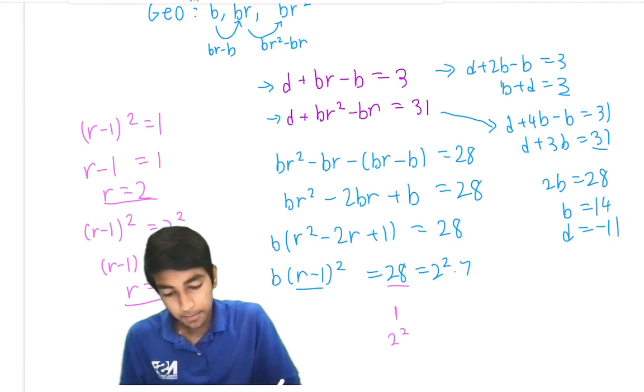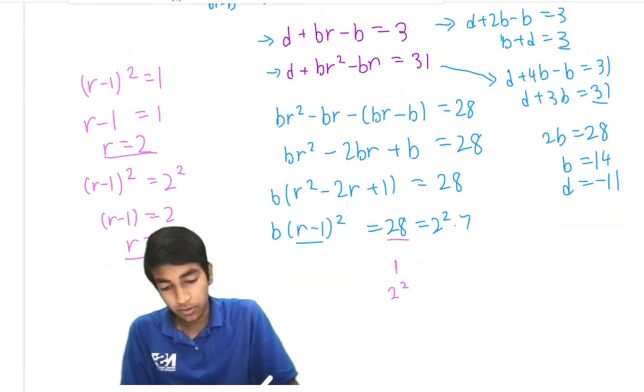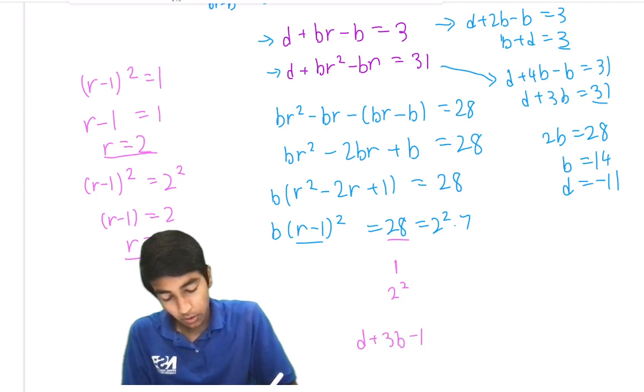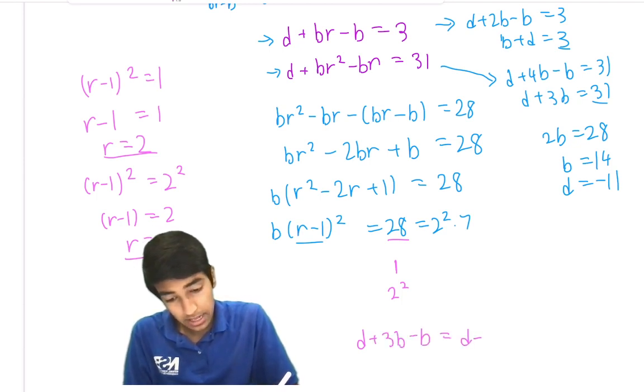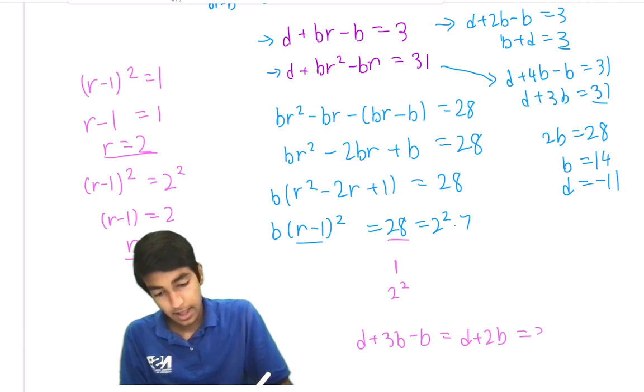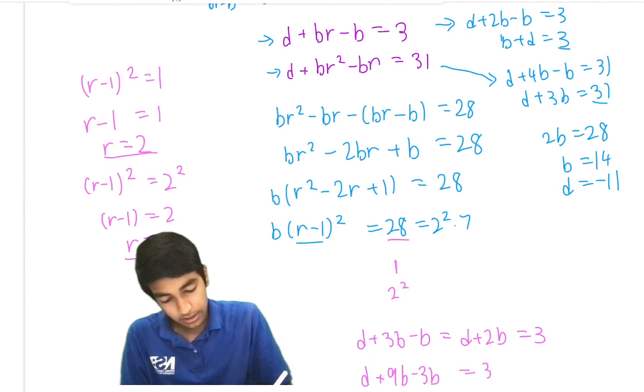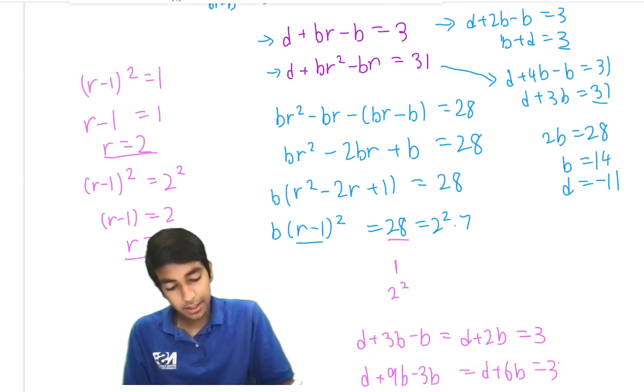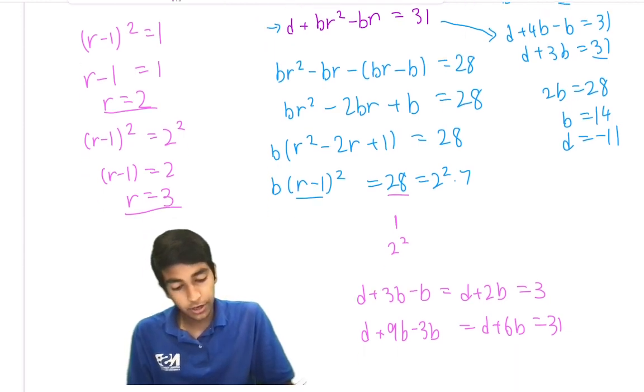The second case is if we have r equals 3. We have d plus 3b minus b, which is d plus 2b is 3. And d plus 9b minus 3b is 31, or d plus 6b is 31. And this means that 4b is 31 minus 3, which is 28. Or b equals 7.